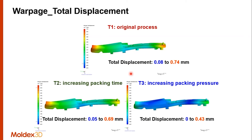For this part, the original process gave a warpage range — total displacement basically — of 0.08 to 0.74 millimeters. As you can see from this plot, the maximum warpage was happening at the ends, and the minimum was happening in the center. With T2, where the pack time was increased while the pack pressure was left the same, it did end up reducing the warpage just a little bit. But with T3, where the pack pressure was doubled and the pack time was left the same, that helped to reduce the warpage quite a bit.